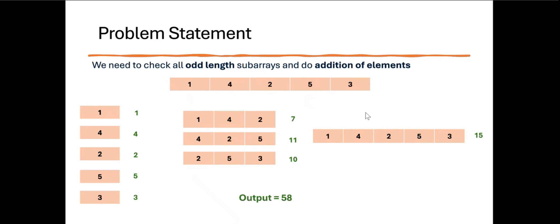If we find out the number of odd length subarrays each element appears in, we can multiply that element by the count of subarrays to get the value contributed by that element to the total sum. We can find this for each element and return the total. So what is the pattern? Let us understand the pattern.